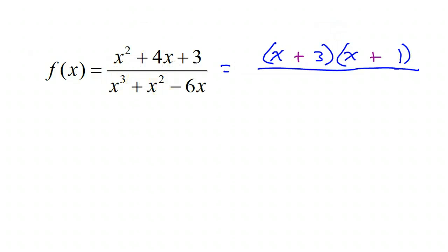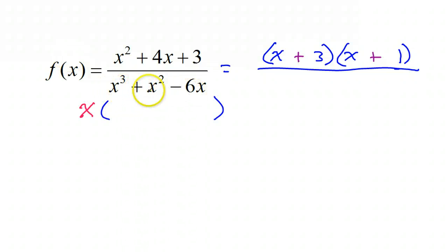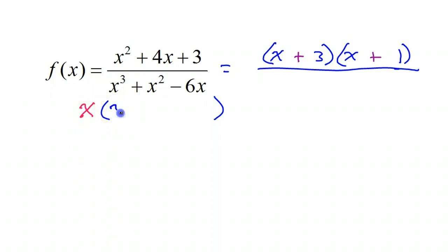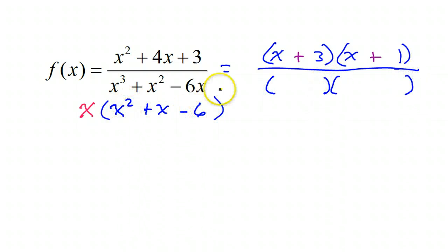Now the denominator — first I see that we have a GCF, so I need to pull out that x that's common. That's going to leave behind x squared plus x minus six. Now this is looking like something that might be factorable because I've got that quadratic trinomial.